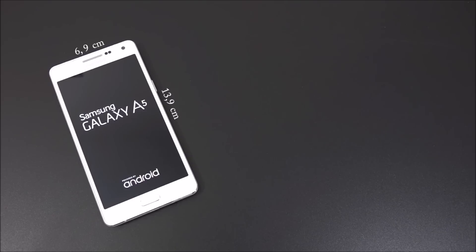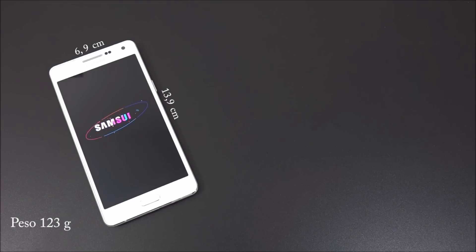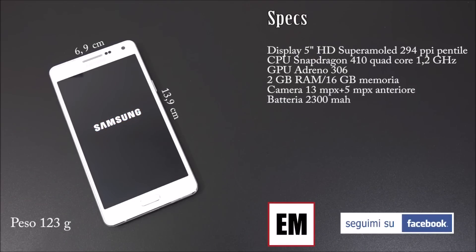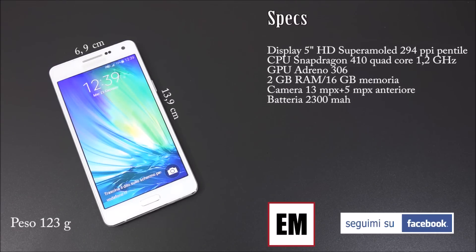So these are the dimensions, and what is incredible is the depth — just 6.7 mm, but the camera comes a little bit out. The display is 5 inches HD Super AMOLED, 194 ppi PenTile matrix. The CPU is the Snapdragon 410 quad-core 1.2 GHz, the GPU is the Adreno 306, 2 GB of RAM and 16 GB of ROM expandable with microSD, the camera is 13 MP plus 5 MP front camera, and the battery is 2300 mAh.